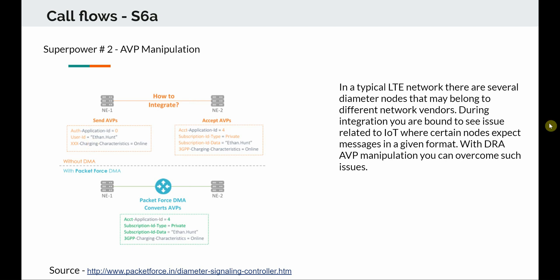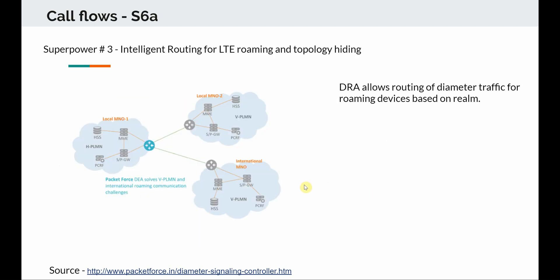In a typical LTE network there are several diameter nodes that belong to different network vendors, and during integration you are bound to see issues related to interoperability where certain nodes expect messages in a given format. With DRA AVP manipulation you can overcome such issues by using a translation mechanism in between.